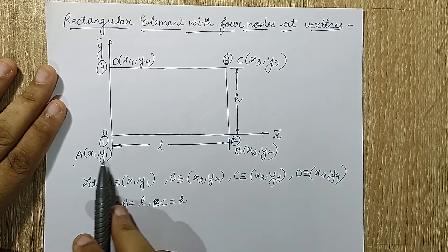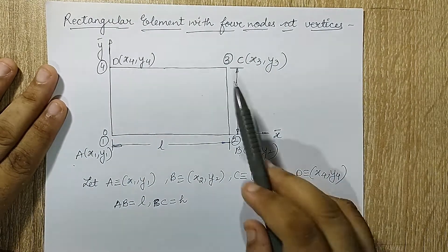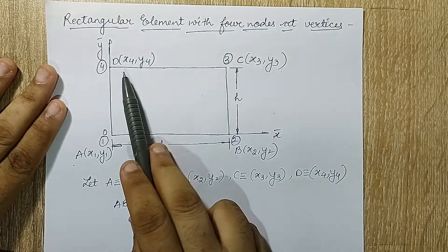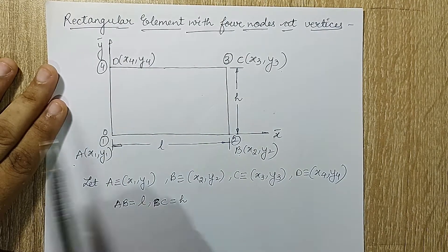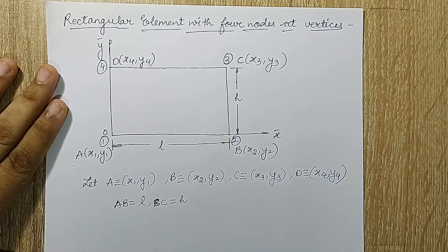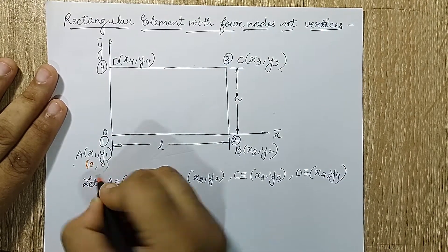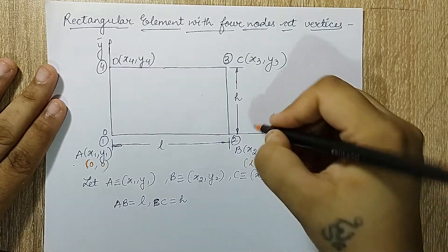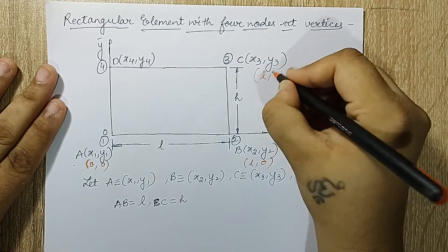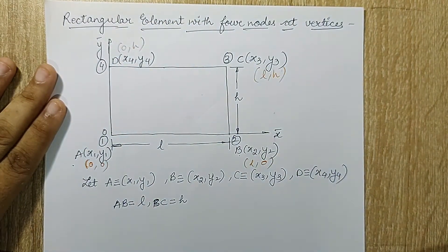Node A has coordinate (x1, y1), B has (x2, y2), C has (x3, y3), and D has (x4, y4). This is the x-axis and y-axis. Node A is at origin (0, 0), this length is marked as l so B is at (l, 0), the height is h so C is at (l, h), and D is at (0, h). These are the coordinates at the vertices of the rectangle.